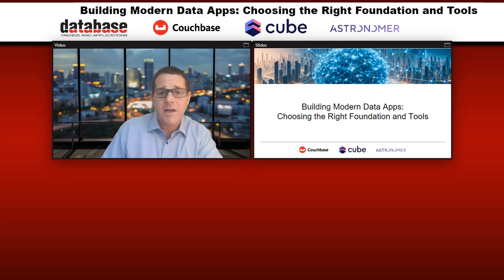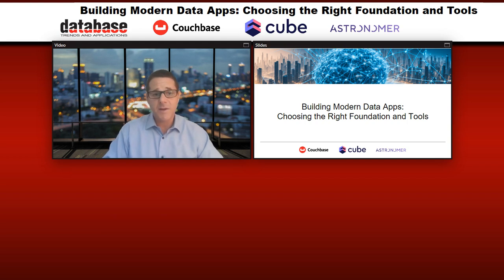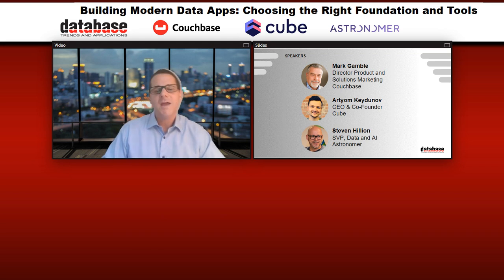Before we begin, I want to explain how you can be a part of this broadcast. There will be a question and answer session. If you have a question during the presentation, just type it into the question box provided and click on the submit button. We're going to try to get to as many questions as possible later. Now to introduce our speakers: Mark Gamble, Director of Product and Solutions Marketing at Couchbase; Artyom Kudanoff, CEO and Co-Founder of Cube; and Stephen Hillion, Senior Vice President, Data and AI at Astronomer.